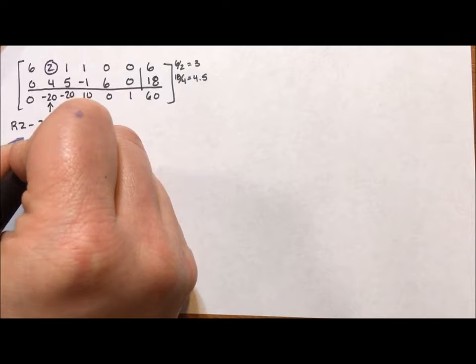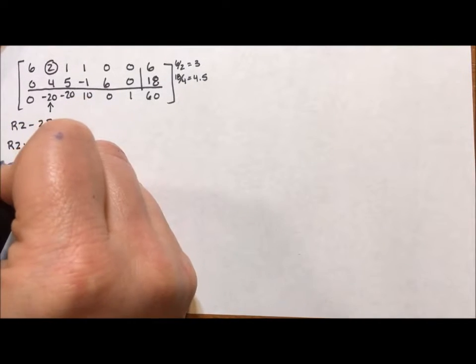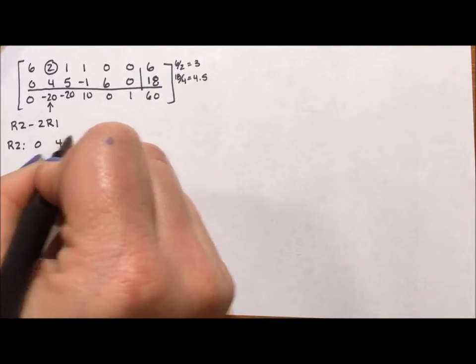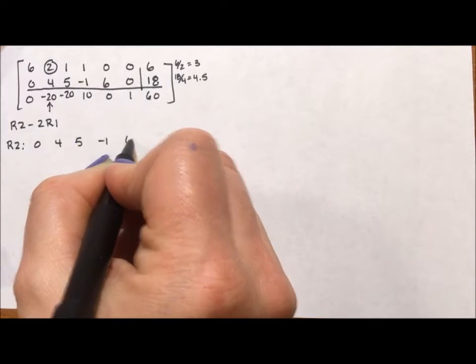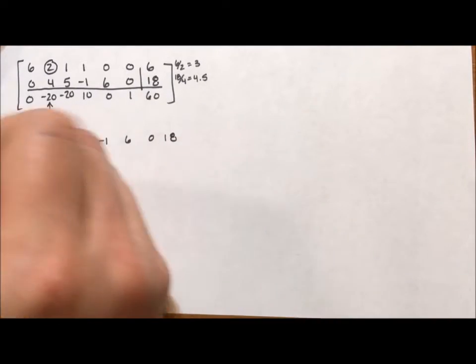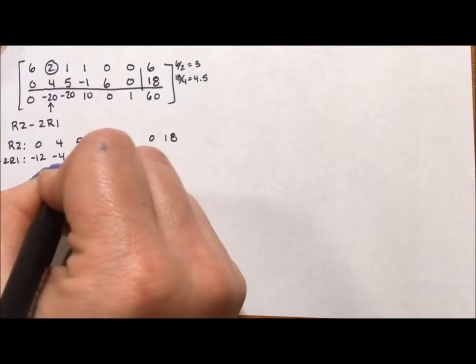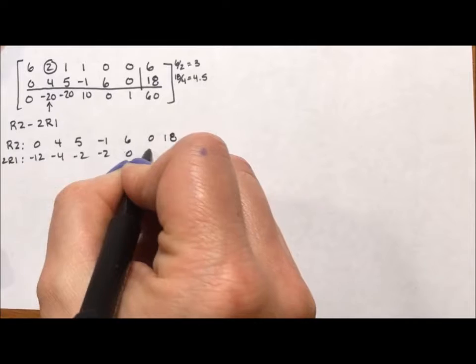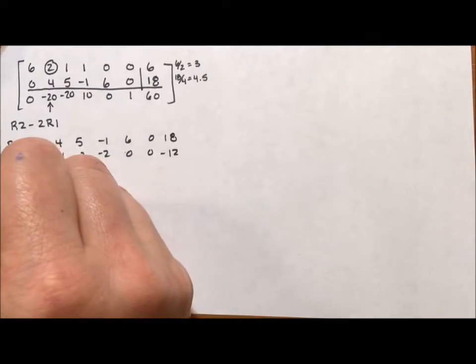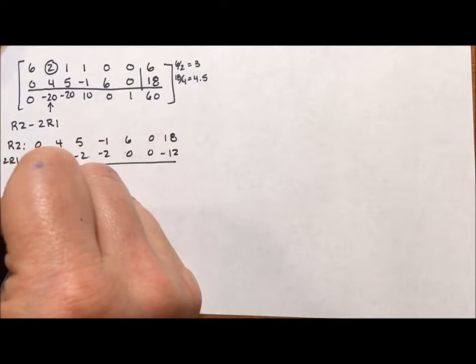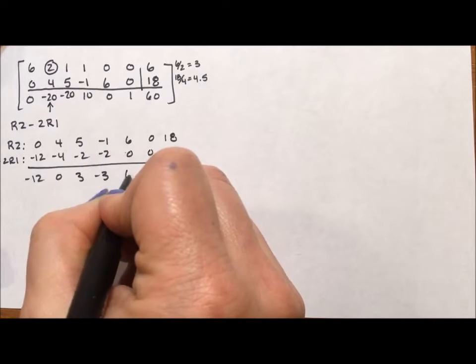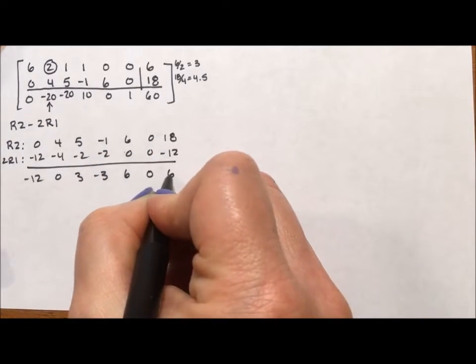So to pivot on that 2, I will take row 2 minus 2 row 1. Row 2 is going to be 0, 4, 5, negative 1, 6, 0, 18. And negative 2 row 1 is going to be negative 12, negative 4, negative 2, negative 2, 0, 0, negative 12. And when I add down, I'm going to get negative 12, 0, 3, negative 3, 6, 0, 6.